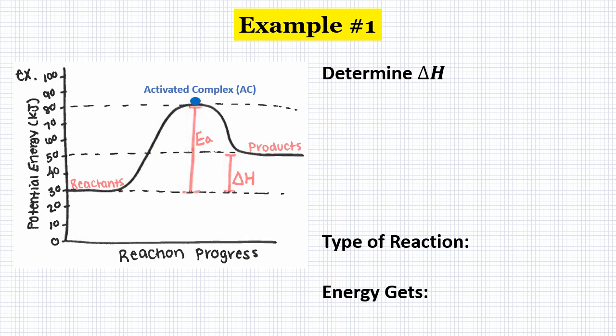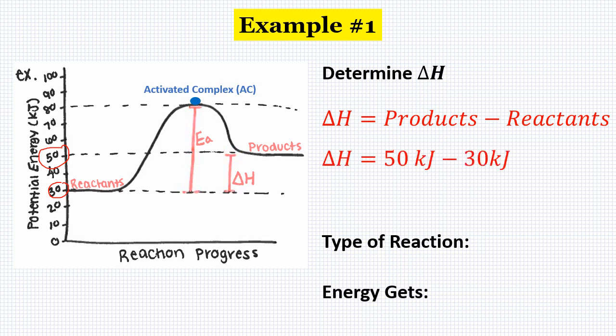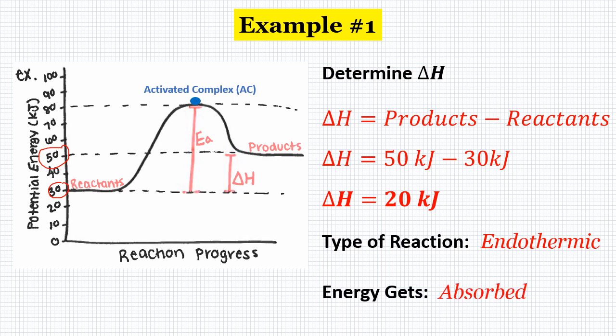Next, let's find the change in enthalpy, or delta H, and identify the type of reaction. Delta H is found by subtracting the energy of the products from the energy of the reactants. The products are sitting at 50 and the reactants are at 30, so 50 minus 30 gives us a delta H value of positive 20 kilojoules. A positive delta H value means this is an endothermic reaction, meaning energy is being absorbed.